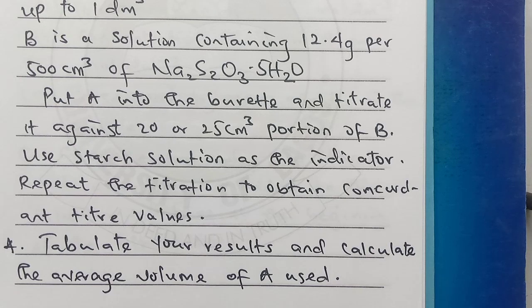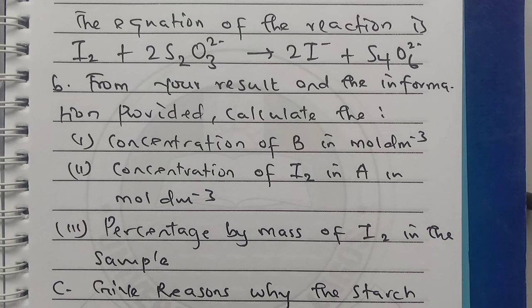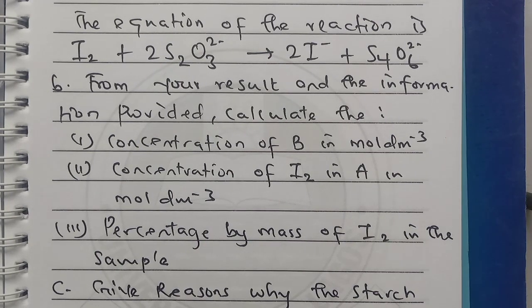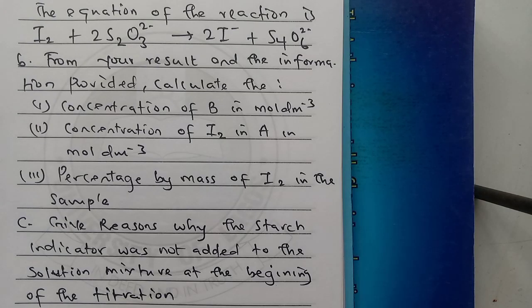The equation of the reaction is I₂ + 2S₂O₃²⁻ → 2I⁻ + S₄O₆²⁻. From your results and the information provided, calculate: concentration of B in mol/dm³, concentration of I₂ in A in mol/dm³, percentage by mass of iodine in the sample. Give reasons why the starch indicator was not added to the solution mixture at the beginning of the titration.